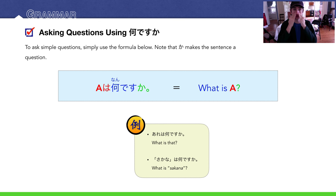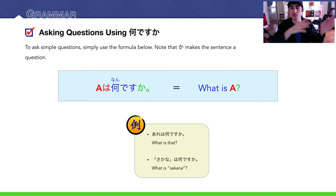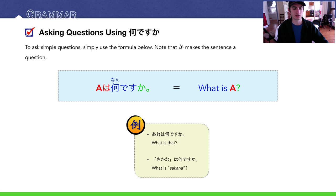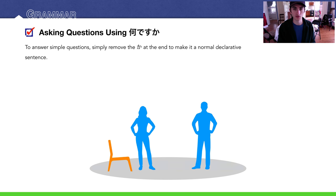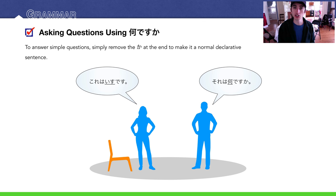With this lesson, you're going to be able to say so many more things in Japanese — your Japanese world is just going to open up. With the phrase これは何ですか or さかなは何ですか, you can ask Japanese speakers what something is or what a Japanese word means in English. To answer, simply remove か, then replace 何 with the answer. So if he asks それは何ですか, she responds これはいすです.